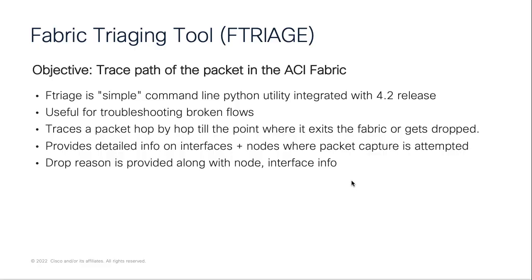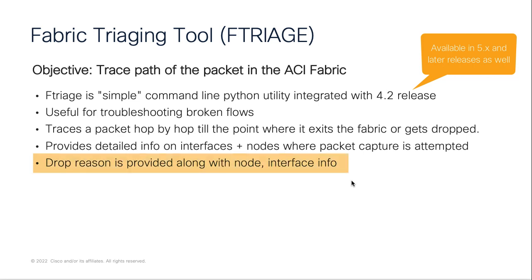F-Triage is a packet tracing tool invoked from the APIC CLI. It comes integrated with the 4.2 release. It can help with troubleshooting broken flows, which can save a lot of time in debugging. The tool traces the path hop-by-hop till the point of exit, and also provides detailed information regarding nodes in the path, along with the ingress and egress interfaces. The tool can be really handy in narrowing down the device dropping the frame, along with the drop reason.